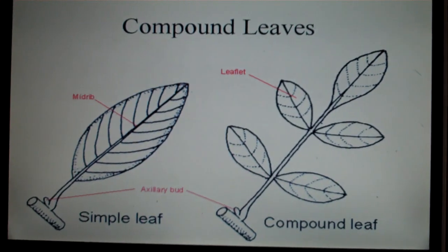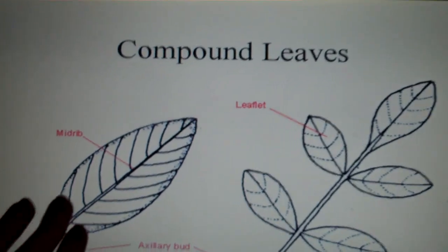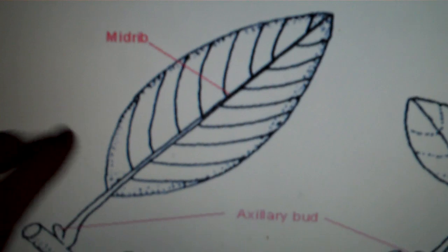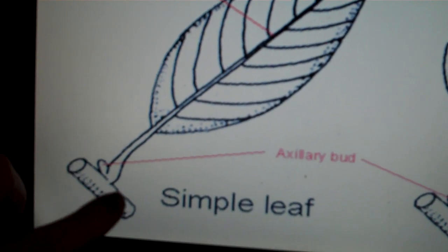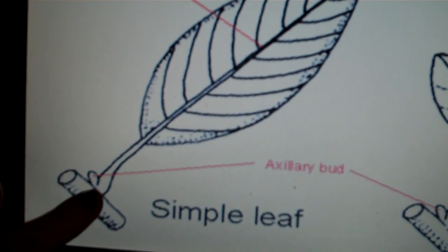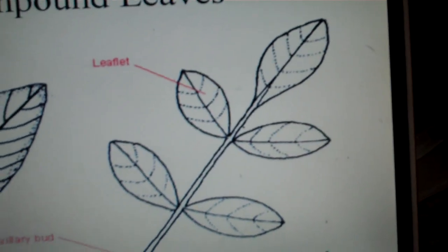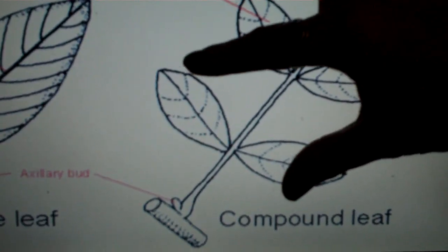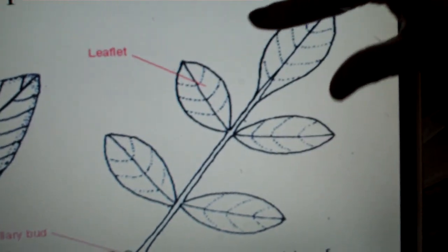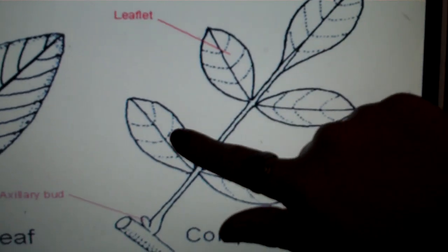Now the next type of leaf, we have compound leaves. We see the simple leaf here, where we have one blade with the petiole and axillary bud attached to the stem at the node. Now in a compound leaf, the blade consists of leaflets. So this whole section would be considered the blade, made up of leaflets.